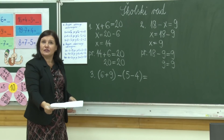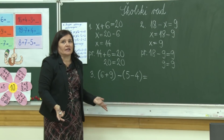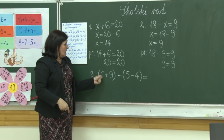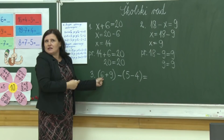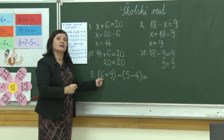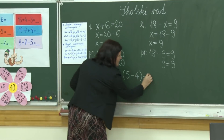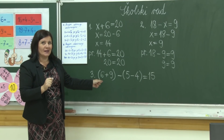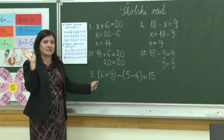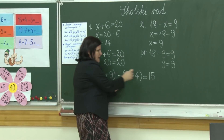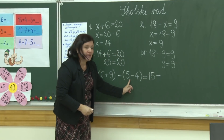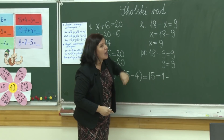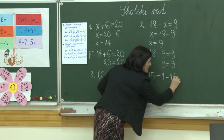Kad dobijemo ovako zadatak sa dvije zagrade, prvo moramo da se riješimo zagrada. Koliko je šest plus devet? Šest plus koji broj da bude deset, i ono što nam ostane — petnaest. Bravo! Koji je znak između zagrada? Minus. Pet minus četiri je jedan. Koliko je pet minus jedan? Četiri. A petnaest minus jedan? Četrnaest. Bravo! Vi sve znate.